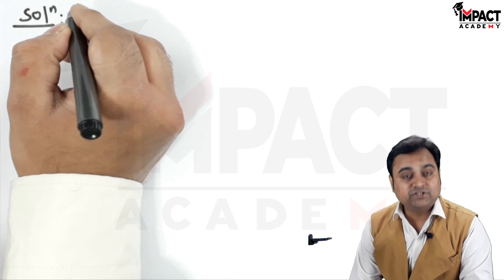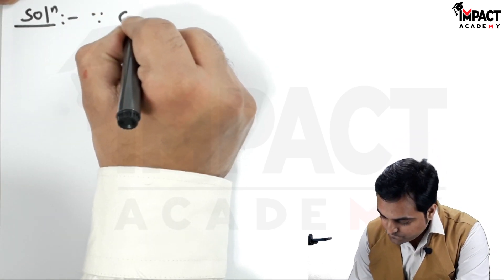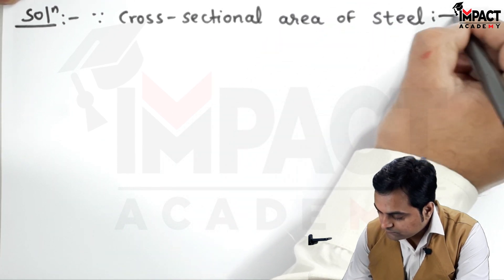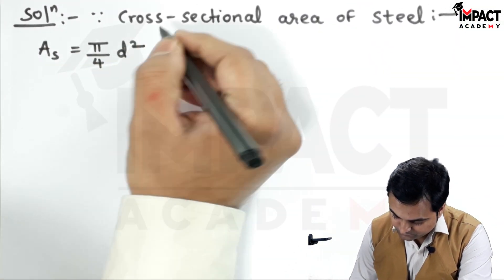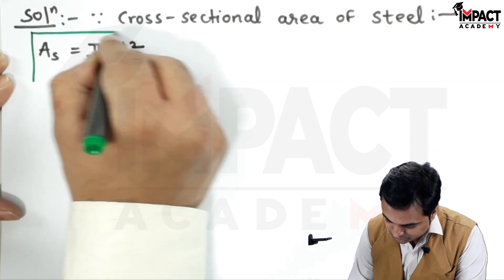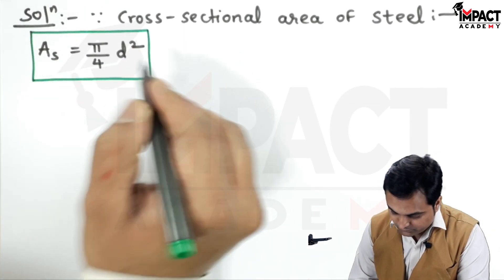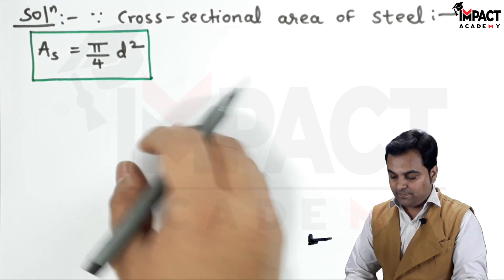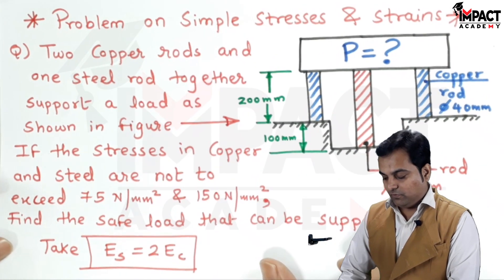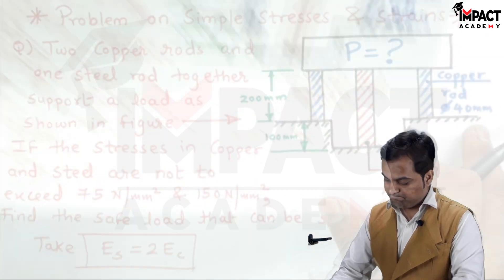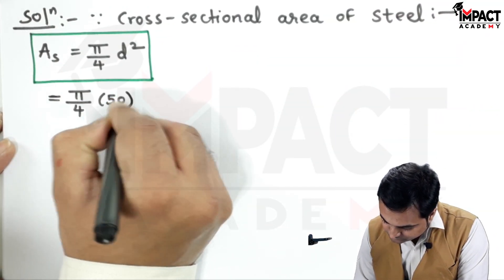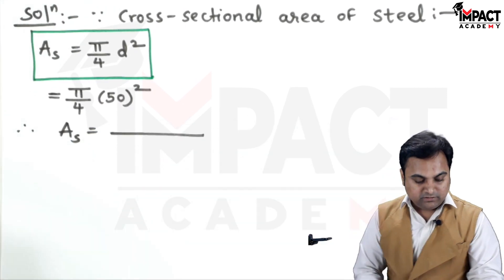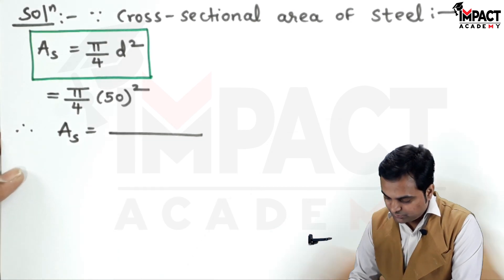In the solution, I will first find the cross-sectional areas for both rods. The cross-sectional area of steel is π/4 × d², where the diameter of steel is 50 mm and for copper it is 40 mm. The area of steel comes out to be 1.96 × 10³ mm².